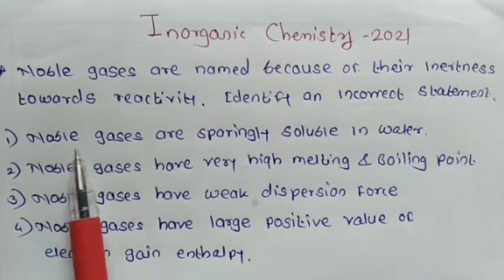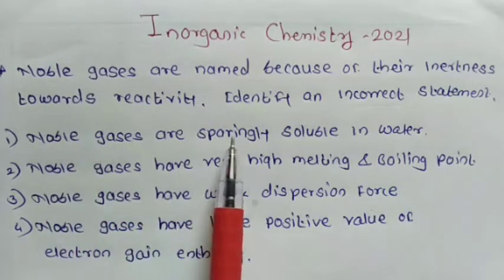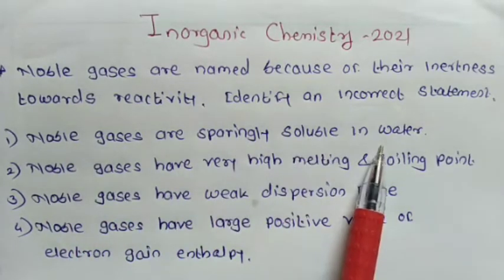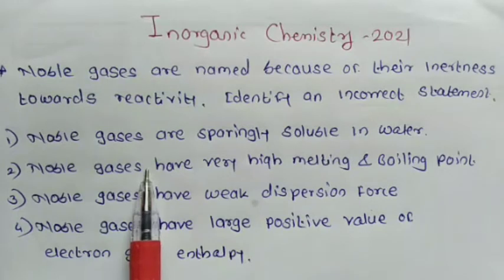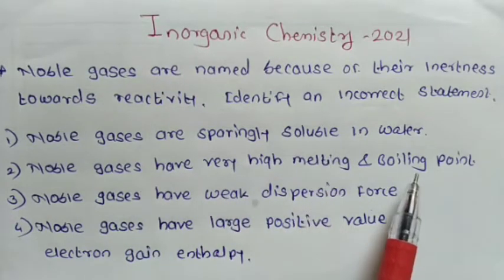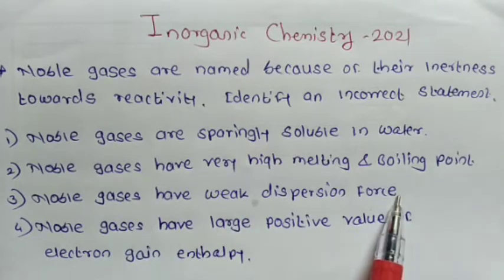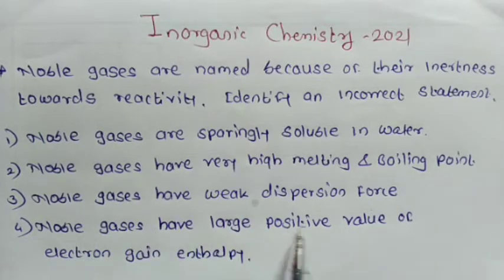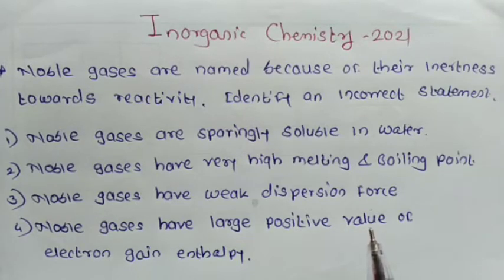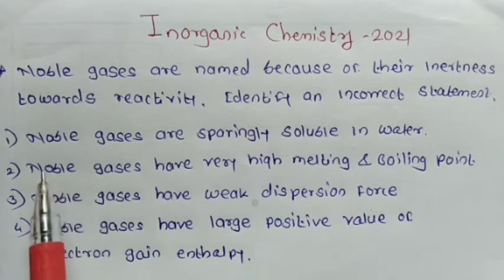See the first statement: noble gases are sparingly soluble in water. Second, noble gases have very high melting point and boiling point. Third, noble gases have weak dispersion force. And fourth, noble gases have large positive value of electron gain enthalpy. Out of these four statements, the incorrect statement about noble gases is the second.